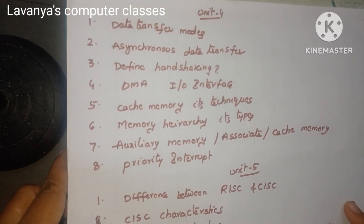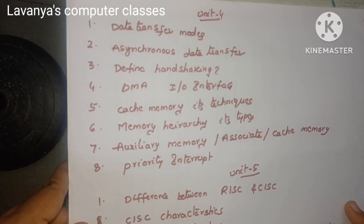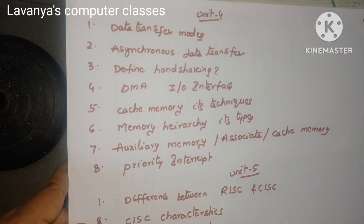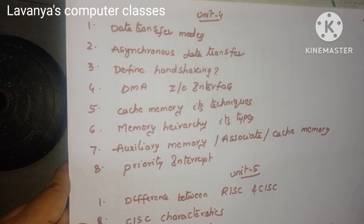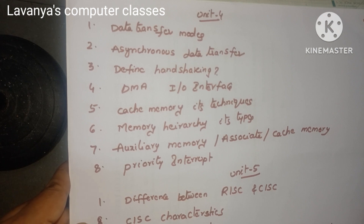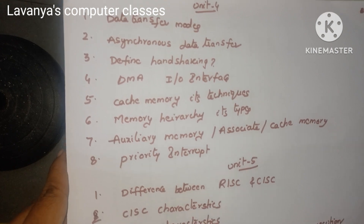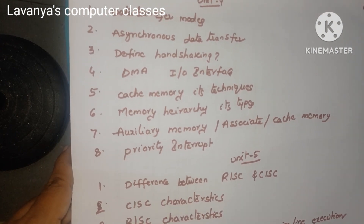Unit 4 questions are: data transfer modes. Asynchronous data transfer. What is handshaking? Explain DMA and IO interface. Cache memory and what are its entry techniques? Explain about memory hierarchy and its types like auxiliary memory, associative memory, and cache memory — definitions and techniques — and what is the priority interrupt?